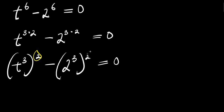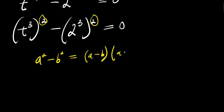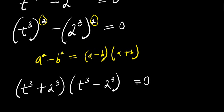Now let's expand using a squared minus b squared equals a minus b times a plus b. We have t power 3 plus 2 power 3 times t power 3 minus 2 power 3 equals zero.